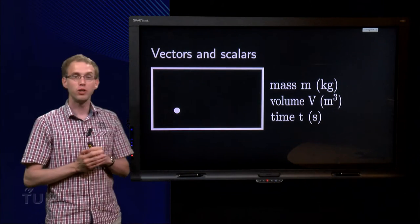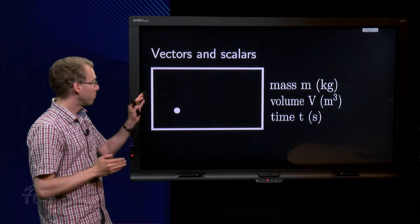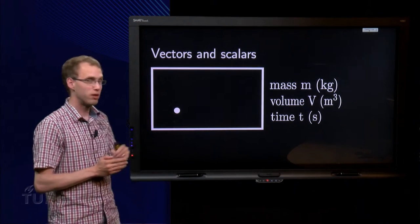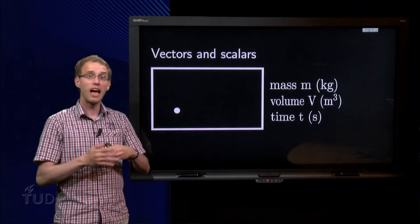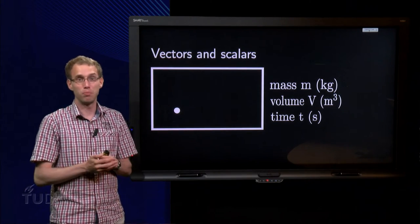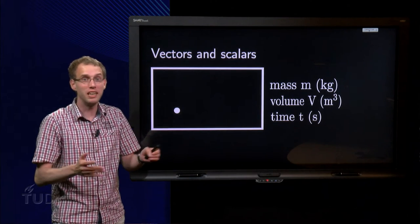And we use an example, we use a pool table with a white ball over here, just leave out all the other ones, just the white one. How can we describe the pool table, which quantities do we need?